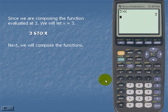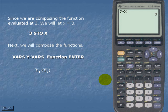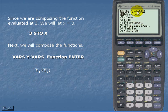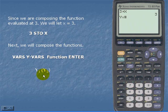Next, we will compose the functions. We're going to use variables, y variables, function, and enter. So let's try it out. In order to choose y sub 1, our function, we want to use variables. We want to scroll over to the left to y variables. And for function, we want to hit enter. And we want to choose y sub 1.